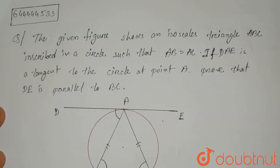Hello everyone. The question is: the given figure shows an isosceles triangle ABC inscribed in a circle such that AB equals AC. If DAE is a tangent to the circle at point A, prove that DE is parallel to BC.